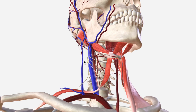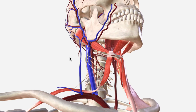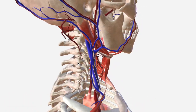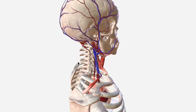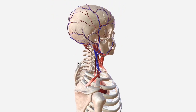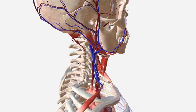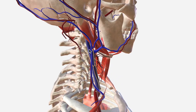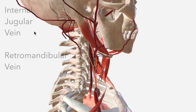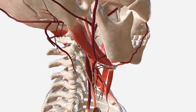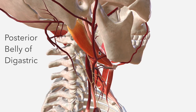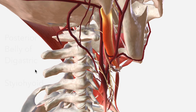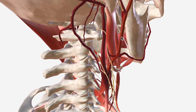If we remove the sternocleidomastoid, we can point out a few more important relations. You'll see this extensive venous network, which just about mirrors the distribution of the branches of the external carotid, all coming from either the internal jugular vein or the retromandibular vein just here. These muscles that we mentioned earlier — the posterior belly of the digastric as well as the stylohyoid muscle — are important because they're effectively the separation between the external carotid just here and the internal carotid here.